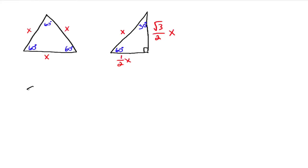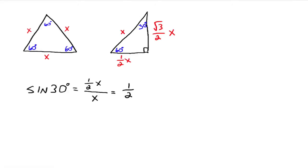Let's find the sine of 30 degrees. Sine is opposite over hypotenuse. Since 30 degrees is up here, the side opposite 30 degrees is the one half x at the bottom. So we have one half x divided by the hypotenuse, which is x, and that simplifies to one half. So the sine of 30 degrees is always one half.